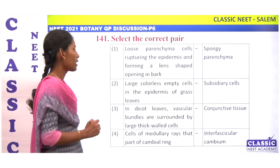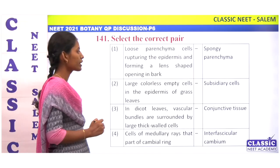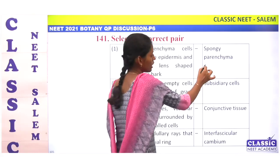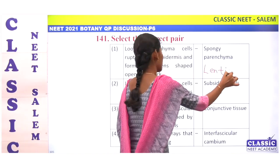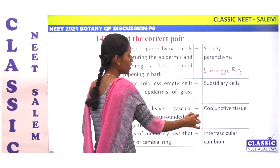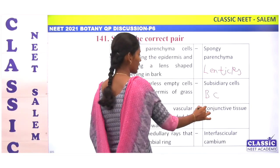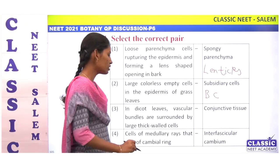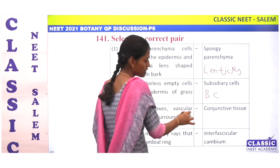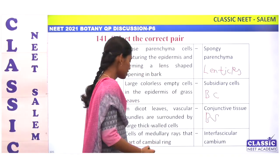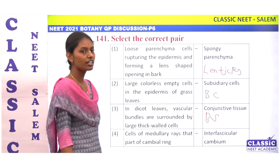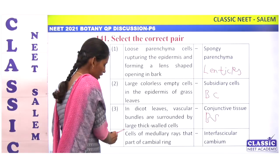Select the correct pair. Loose parenchyma cells rupturing the epidermis and forming a lens-shaped opening — this is actually lenticels, not spongy parenchyma. Large, colorless, empty cells are bulliform cells, not subsidiary cells. In dicot leaf, vascular bundle surrounded by large thick-walled cells is the bundle sheath. Cells of medullary ray that part of cambium ring is interfascicular cambium — this is correct. Option 4.